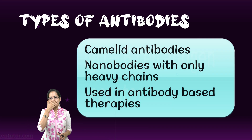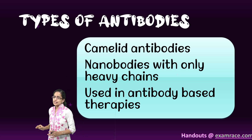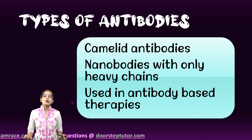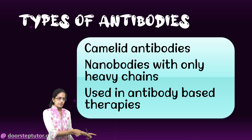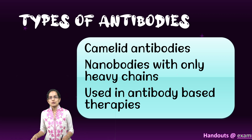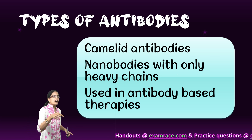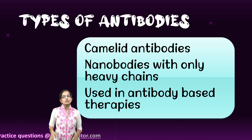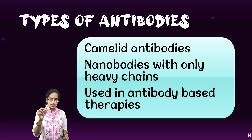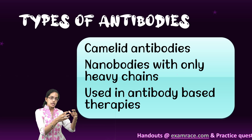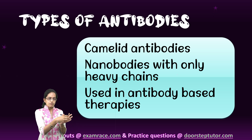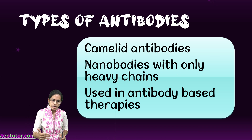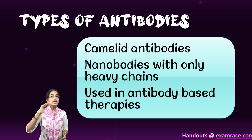A very important different type of antibody is the Camelid antibody. Camelid antibodies are nanobodies which have only heavy chains — the light chain of the Y structure is not present. These antibodies are used for antibody-based therapies. First identified in camels, they bind to an antigen recognition site with high specificity. They are used in therapies because they are very small, easily soluble, highly specific, and have a better tissue penetration rate.